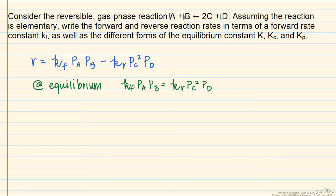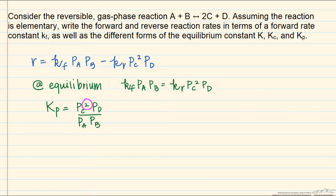At equilibrium, the net rate of reaction will be equal to zero, which implies we can equate the left-hand and right-hand sides of the expression. Also at equilibrium, we can write a pressure-based equilibrium constant Kp as the pressures of the products divided by the pressures of the reactants, all raised to their stoichiometric coefficients — giving the PC squared term. Combining these equations, Kp must equal the forward rate constant over the reverse rate constant.